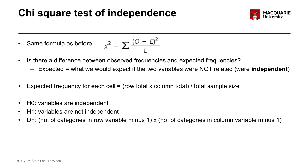The degrees of freedom for our chi-square test of independence is the number of categories in our row variable minus one, multiplied by the number of categories in our column variable minus one. In this instance, we've got two categories in our row variable and two categories in our column variable, so our degrees of freedom would be two minus one, multiplied by two minus one — one multiplied by one gives us one degree of freedom.